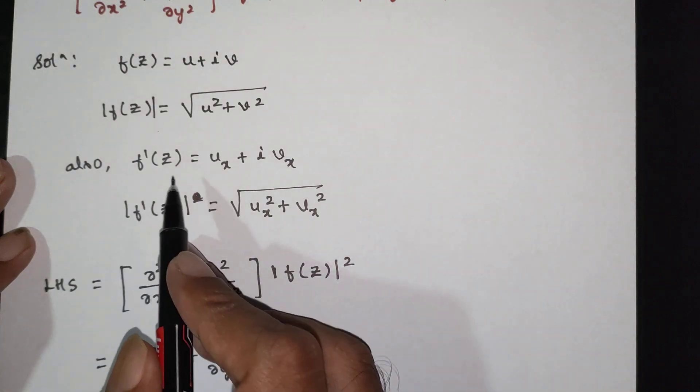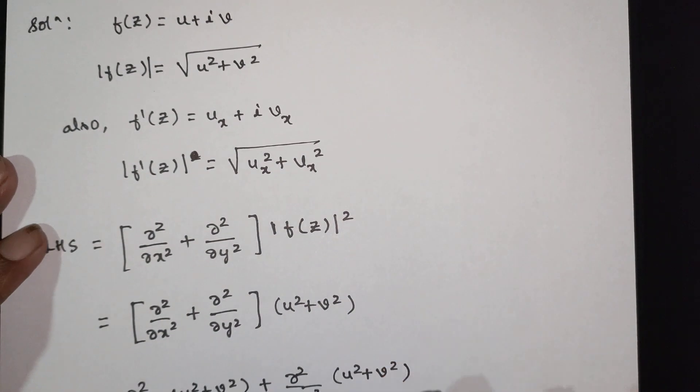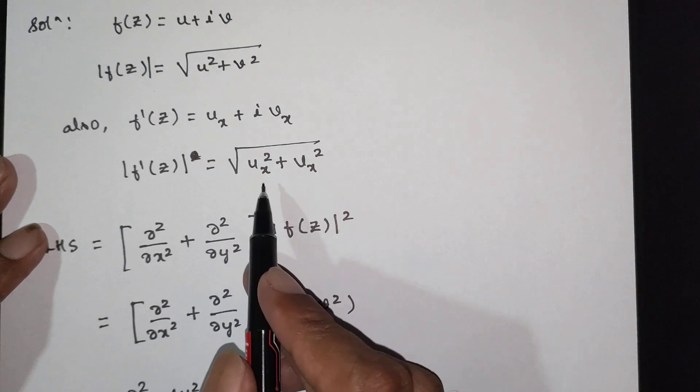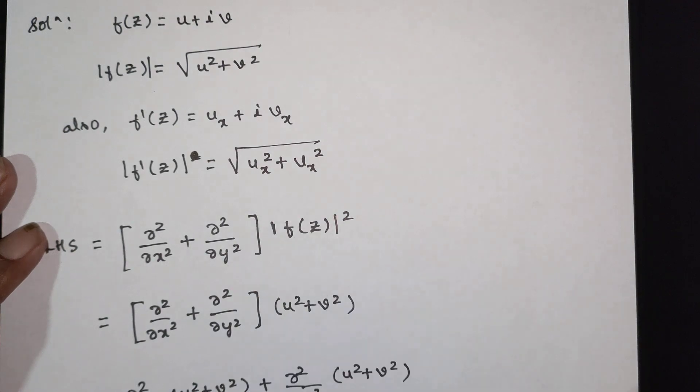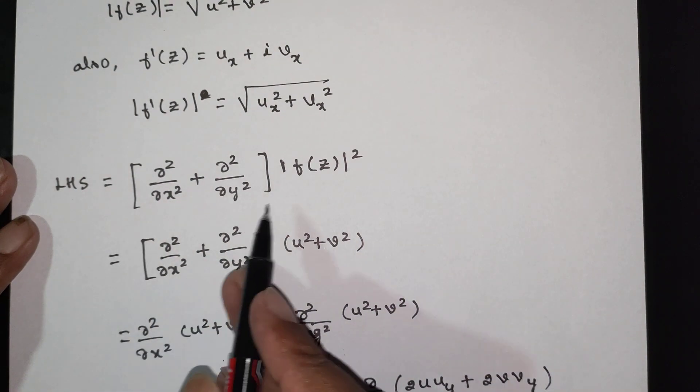Also, f'(z) = ux + i·vx, so the modulus of f'(z) = √(ux² + vx²). Therefore |f'(z)|² = ux² + vx². Thus LHS = 4|f'(z)|² = RHS. Hence proved. Thank you.